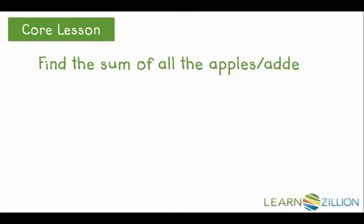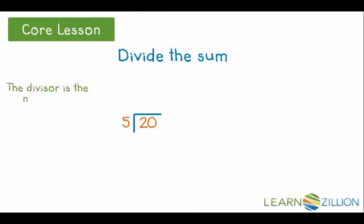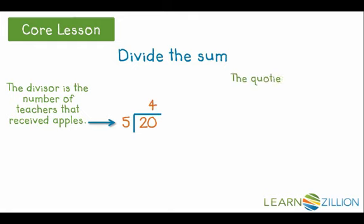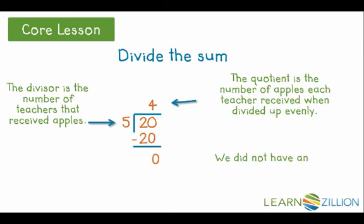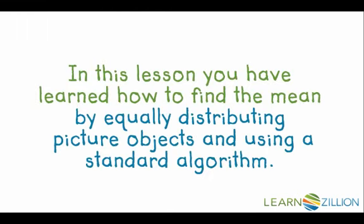Let's think about the steps we took to solve the problem. First, we added all of the data together. Then we divided all of the apples into five equal groups. So we took our sum of twenty and divided by five to arrive at the quotient of four, which is the mean amount of apples that each teacher received. We did not have any apples left over, so our remainder is zero. And each teacher received a mean of four apples.